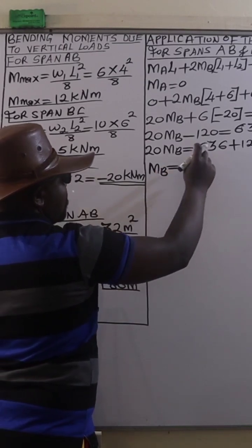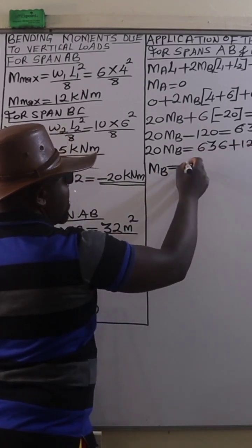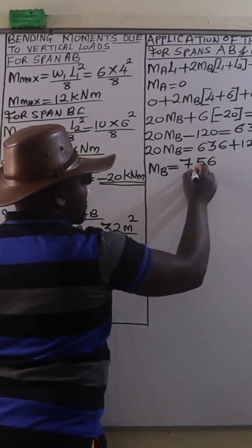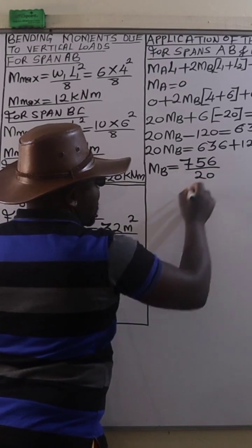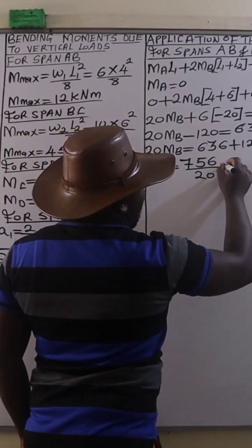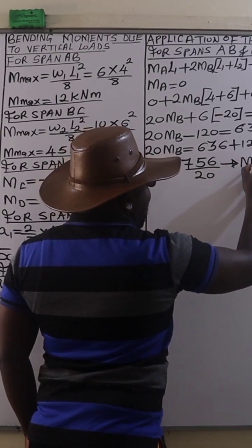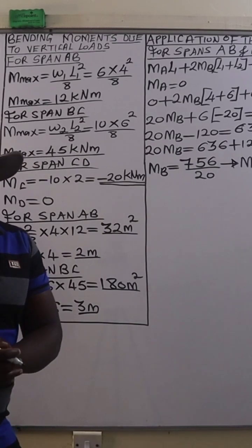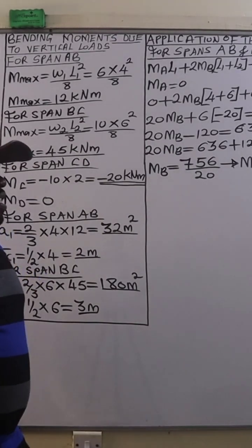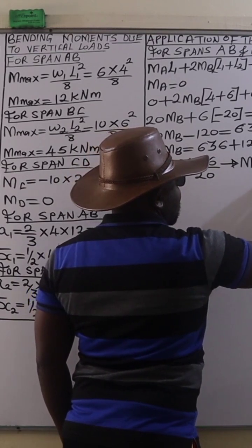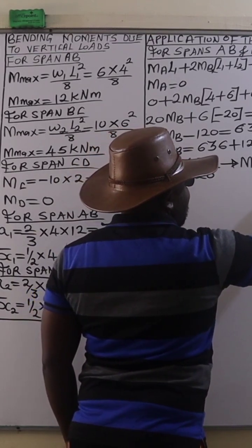being equal to 636 plus 120, that is going to be 756. We divide that by 20 and that is going to give us a bending moment of 37.8 kilonewton meters.